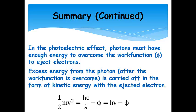So in the photoelectric effect, photons must have enough energy to overcome the work function. They have to have a short enough wavelength or a high enough frequency to make the energy of that photon more than the work function of the metal. And any excess energy, so if the photon has more energy than the work function, then that extra energy is carried off in the form of kinetic energy with the ejected electron. And with that kinetic energy, we can plug in the mass of an electron, and we can calculate the velocity that that ejected electron leaves the surface with.